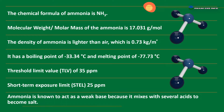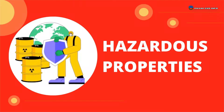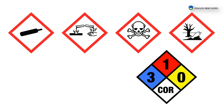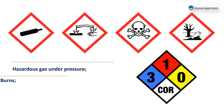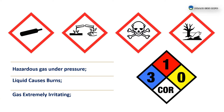When reacted with hydrochloric acid, ammonia is converted to ammonium chloride. Hazard Properties of Ammonia: it is a hazardous gas under pressure, liquid that causes burns, and is an extremely irritating gas.